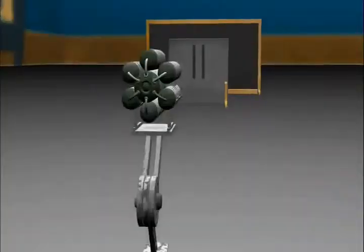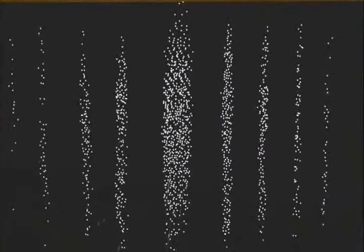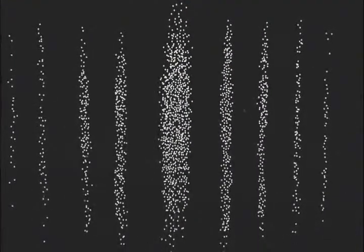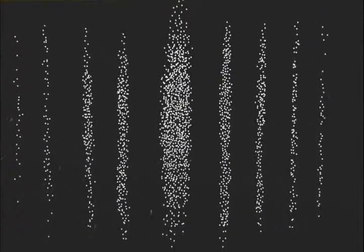We fired electrons, tiny bits of matter, through. But we get a pattern like waves, not like little marbles. How? How could pieces of matter create an interference pattern like a wave? It doesn't make sense.